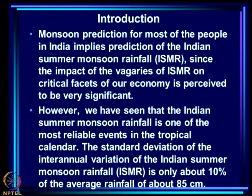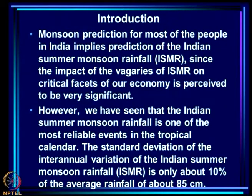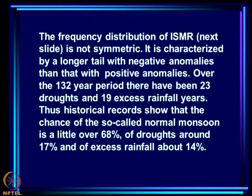However, we have seen that the Indian summer monsoon rainfall is one of the most reliable events in the tropical calendar. The standard deviation of the inter-annual variation of ISMR is only about 10 percent of the average rainfall of 85 centimeters.